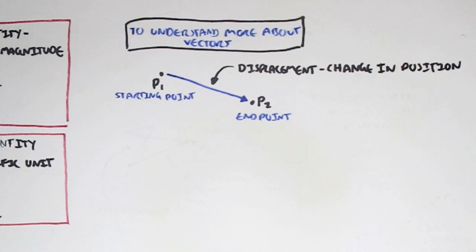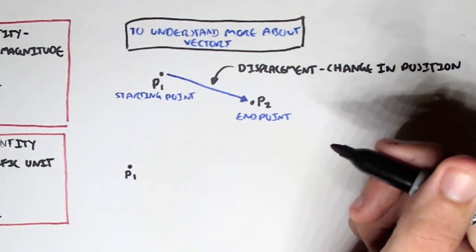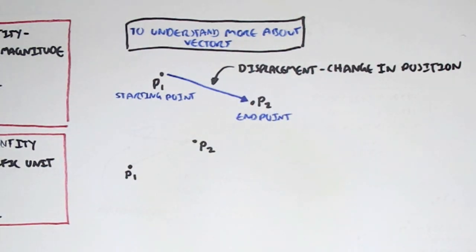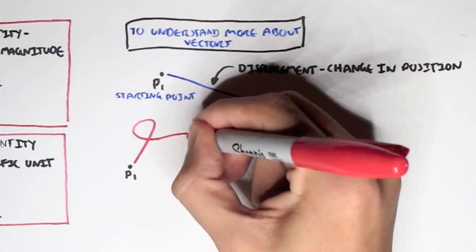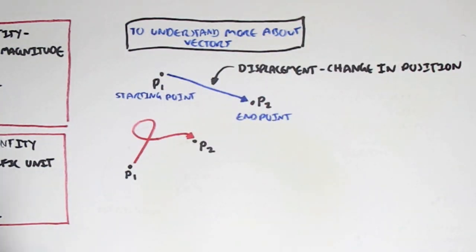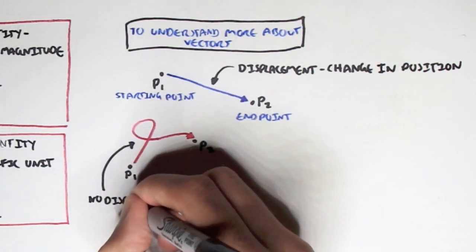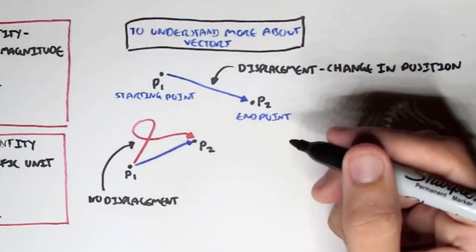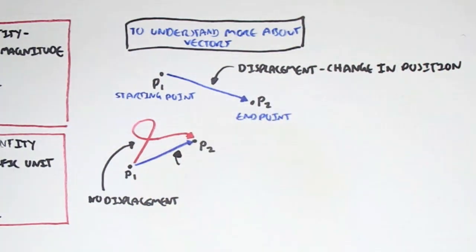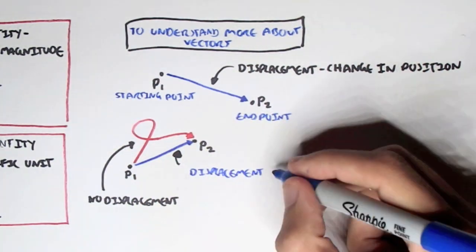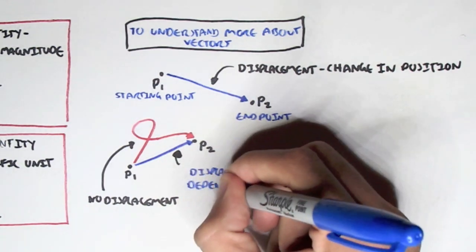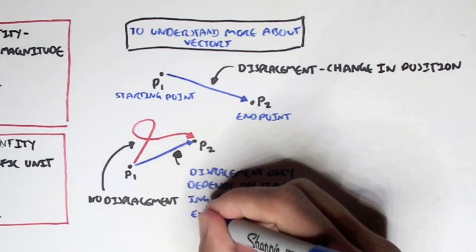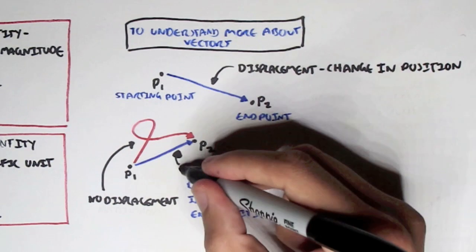Here's another example from point 1 to point 2, except this red line is moving all around before landing on point 2. But this is not a displacement — the red one. This blue line, however, with a direction is a displacement, because displacement only depends on the starting point and end position, not the route that we take.